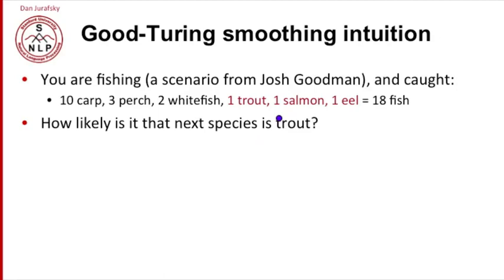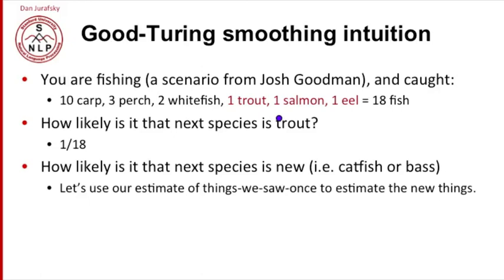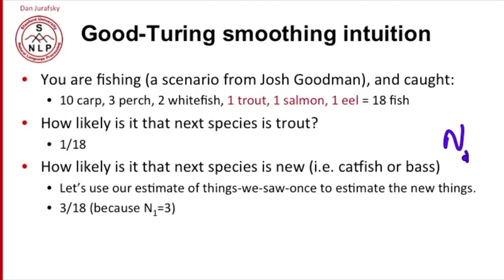There have been eighteen fish. Trout occurred one time out of eighteen, so the probability ought to be 1/18. But let's ask: how likely is it that the next species is a new species — catfish or bass — something that occurred zero times? The Good Turing intuition says use our estimate of things we saw once to estimate these new things. N_1 is 3, so out of 18 things, 3 were seen only once. We use 3/18 as our estimate for things we've never seen, reserving that probability mass for all unseen things.